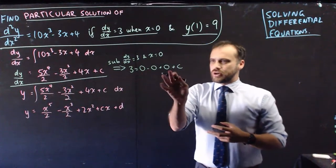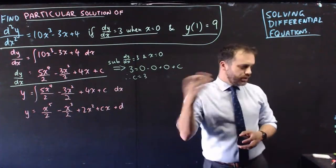So 3 equals 0 plus c, c equals 3. That feels pretty good.